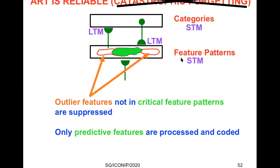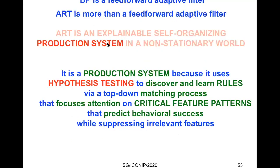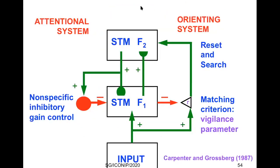ART is reliable and avoids catastrophic forgetting because outlier features not in the critical feature pattern are suppressed, so only the predictive features are processed and coded. ART is a production system because it carries out hypothesis testing, nicely illustrated in the simplest ART model called ART1, which Gail Carpenter and I published in 1987. ART1 has an attentional system that performs all the category learning, expectation learning, and attention, interacting with an orienting system that is activated when there are mismatches in the attentional system and thereby drives a reset and search for novel or better-matching categories.